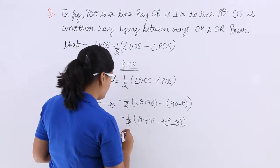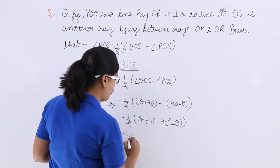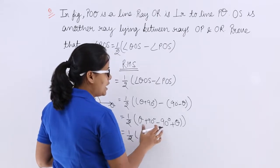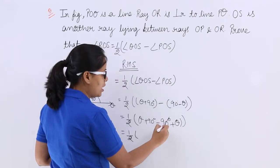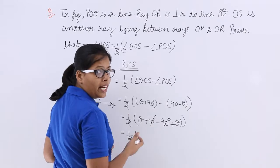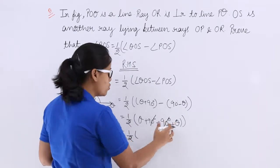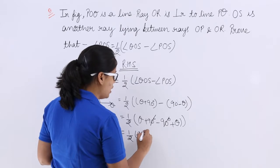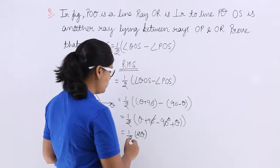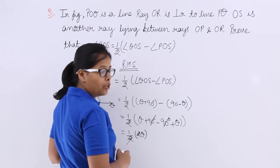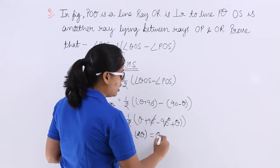So now see what will be the value: half of theta plus 90 minus 90 plus theta. 90 degree will get cancelled and theta plus theta, these two are same, so value will be 2 theta. Now you can cancel 2 by 2, so what you will be getting is theta.